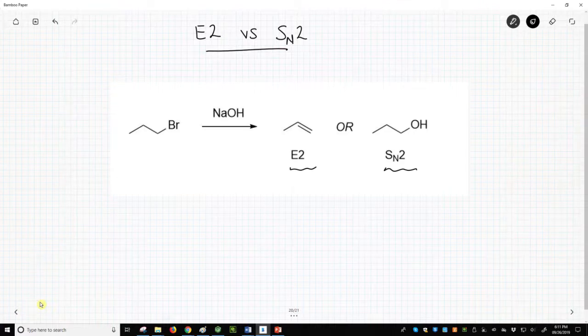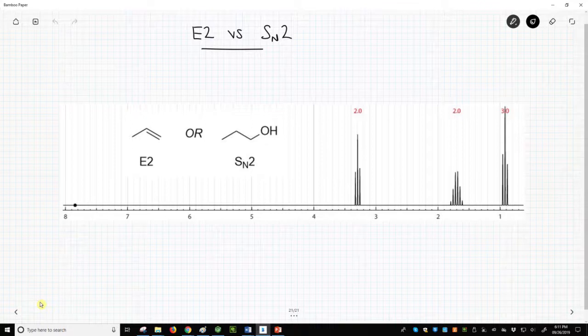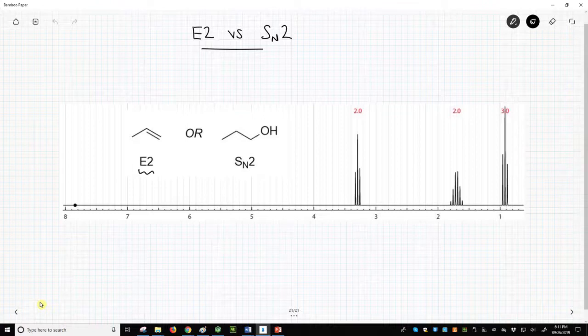Let's see the spectrum. Here is the spectrum generated by nmrdb.org. So who is correct? Is this the spectrum of the E2 product or the SN2 product? With just a quick glance, we can eliminate the E2 product.